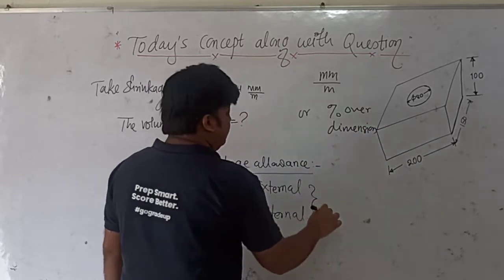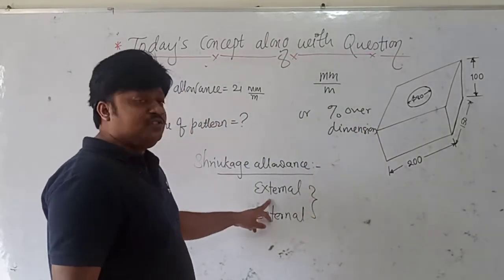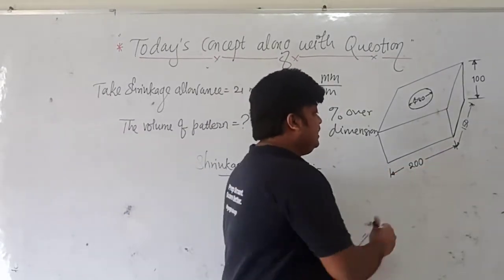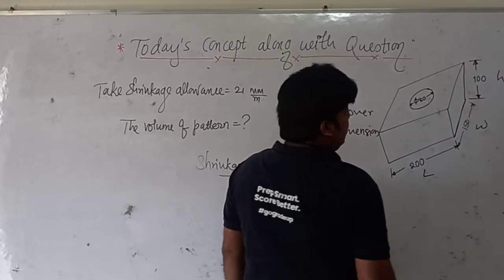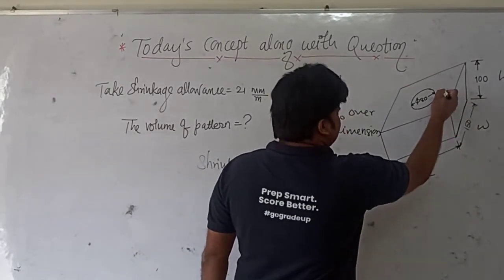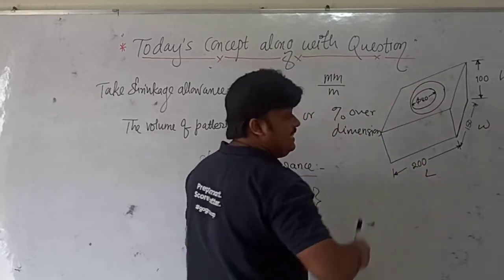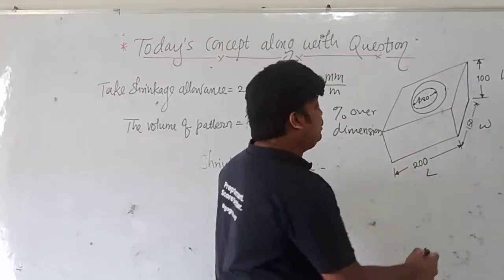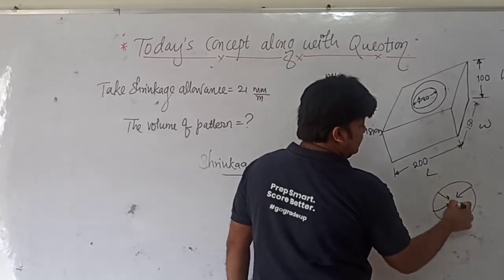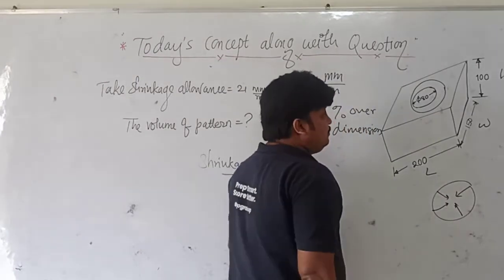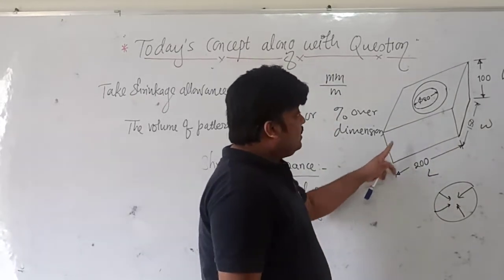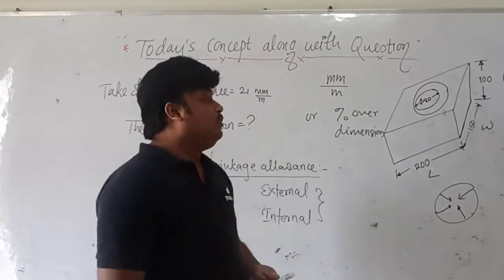Whenever the material is going to shrink, it may be the external dimensions — like length, width, or height. Not only external dimensions shrink, but the internal dimensions also shrink. For example, this bore is also going to shrink towards the center of the circle. So both external and internal dimensions contract due to shrinkage.